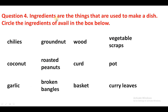Question 4. Ingredients are the things that are used to make a dish. Ingredients wo cheez hoti hain jo koi bhi dish tayar karne ke liye prayog mein layi jaati hain. Circle the ingredients of avial in the box below. Neachet box mein jo ingredients hain, avial banane ke liye use ki gayi thi, unko circle karein. Chillies,